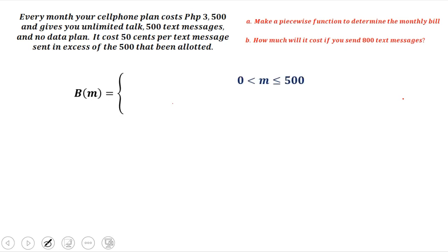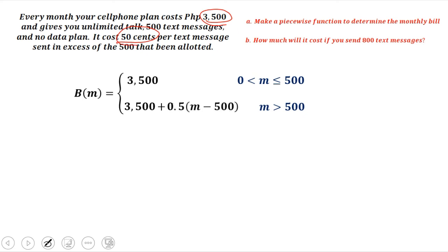If you send less than or equal to 500 text messages, your monthly bill is only 3,500 — that's your regular monthly bill. But if you're using more than 500 text messages, your monthly bill is your regular monthly bill plus the extra cost: 0.5 times the number of messages minus 500.